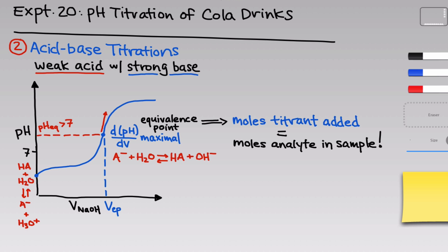Because we know the concentration of titrant, we know the moles of titrant we've added — it's the known molarity times V_EP, the volume of titrant added to reach the equivalence point. That equals the number of moles of HA in the original sample, n_HA. Since we know the left-hand side, this is how we calculate the number of moles of HA in the original analyte: multiply the concentration of hydroxide by the volume required to reach the equivalence point. To find the concentration of HA in the original analyte, take this number of moles and divide by the original sample volume.